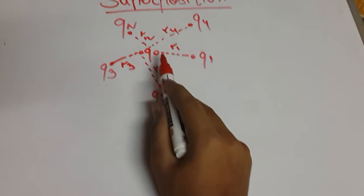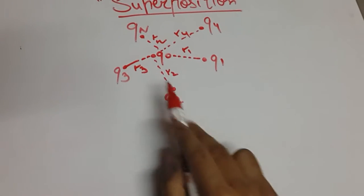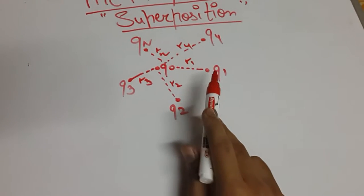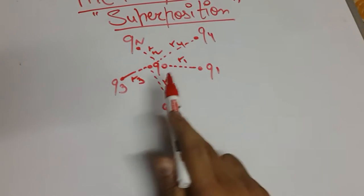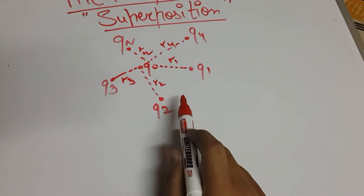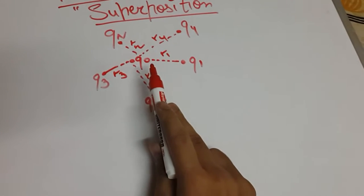Suppose a charge q0 which is surrounded by many other charges q1, q2, q3, q4 till the n number of charges. Each are separated by different distances r1, r2, r3, r4, rn. So each charge will exert some kind of force of attraction or repulsion on q0 charge.